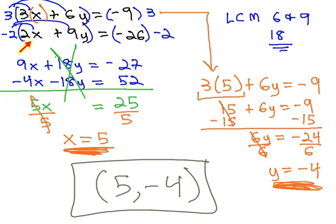This is the point where the two lines will intersect if we were to graph them. It means that when x is 5 and y is negative 4, both of these equations will be true equations.